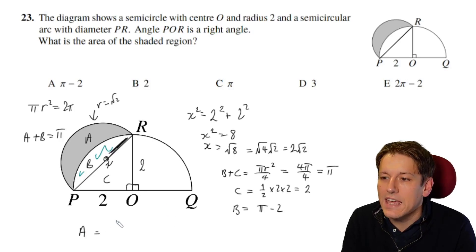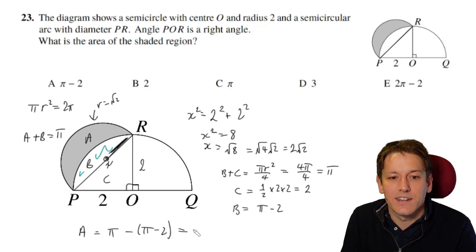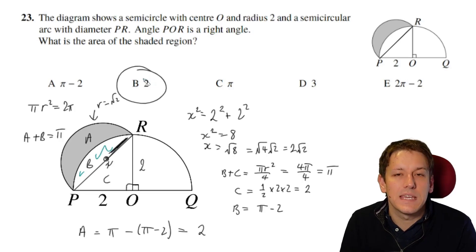And that means finally that the area of a is pi minus the area of b, which is pi minus pi minus 2. So the pi's cancel out here, and we get a nice exact answer of 2. So the answer here is B, 2.